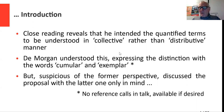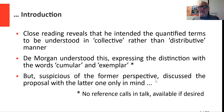De Morgan, with whom he was in contact — not always very friendly — understood this and expressed the distinction between collective and distributive conceptions using his words 'cumular' and 'exemplar': cumular for collective, exemplar for distributive. De Morgan was suspicious of the cumular perspective and always discussed Hamilton's proposal with the distributive or exemplar perspective in mind.